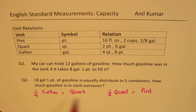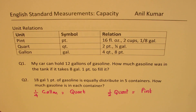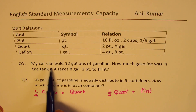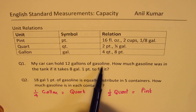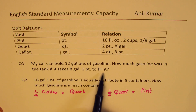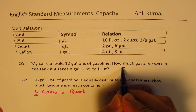We will now see how to work with these units with the help of two examples. Question number one: my car can hold 12 gallons of gasoline. How much gasoline was in the tank if it takes eight gallons one pint to fill it? So here we'll see how to do subtraction.